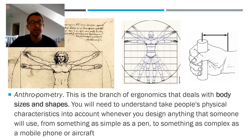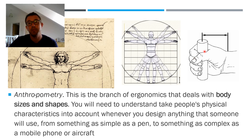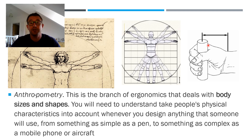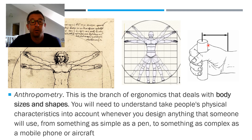Now anthropometrics — you may have seen some of these pictures before. It's linked to ergonomics but it's specifically about people's size and shapes. You need to know the size of people's body parts to design something effective. For example, making a handlebar grip requires knowing people's grip size; making a mobile phone requires knowing hand span. This extends all the way to spacecraft, aircraft, and cars. So ergonomics is linked to anthropometrics, but anthropometrics is specifically about body sizes and shapes.